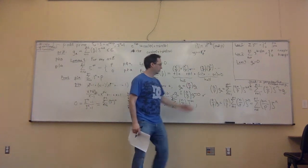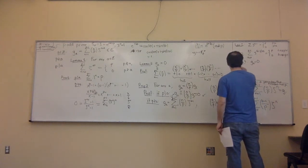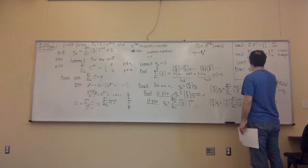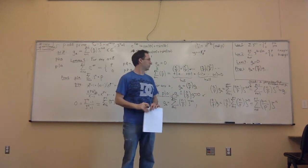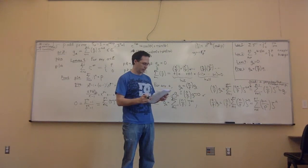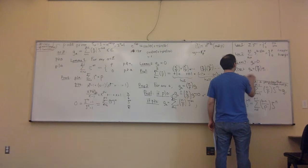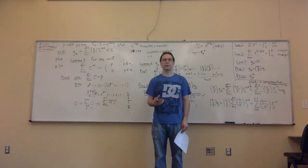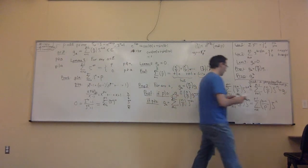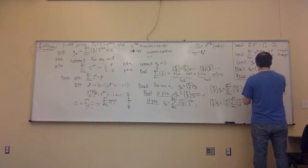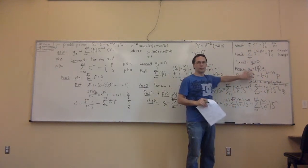So G sub A equals A on P times G sub 1 — that's Proposition 2. Now finally Proposition 1, which was the formula for G sub A squared — that's all we have left to prove. G sub A squared was the most surprising one of all. It says that G sub A squared is some sign times P — that G sub A is like a square root of P. The statement is: G sub A squared equals minus 1 to the P minus 1 over 2 times P. This was by far the most important thing in proving quadratic reciprocity.